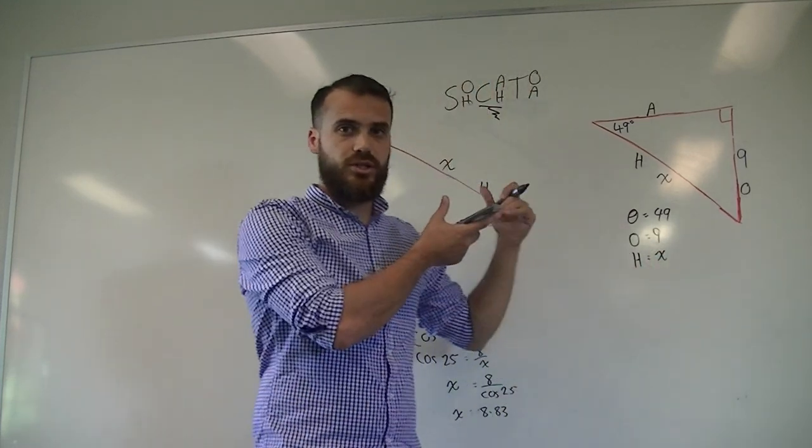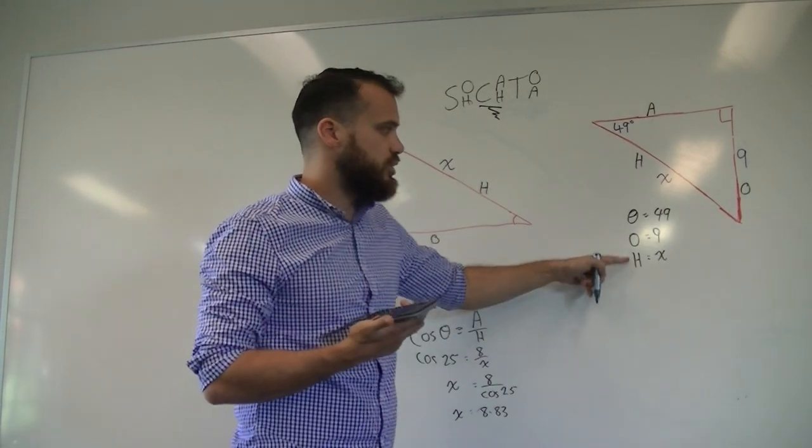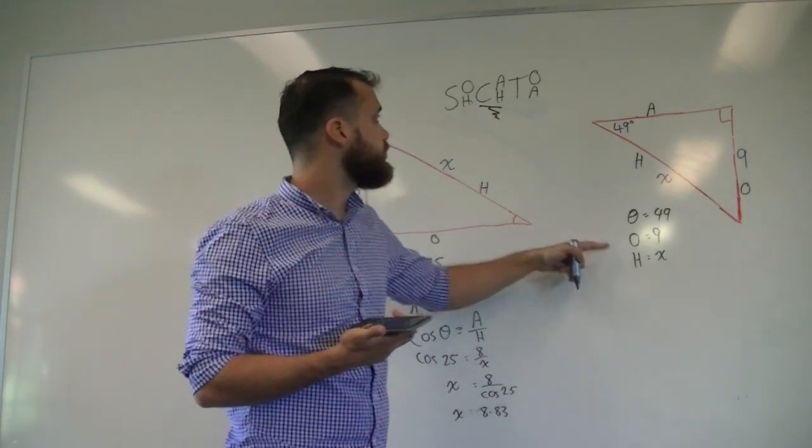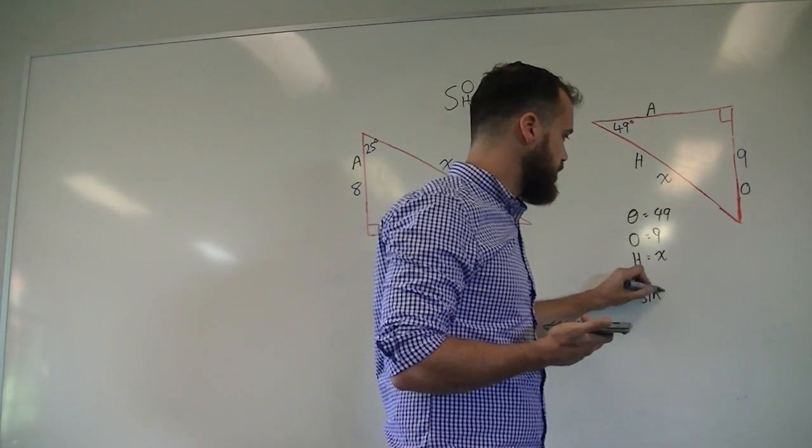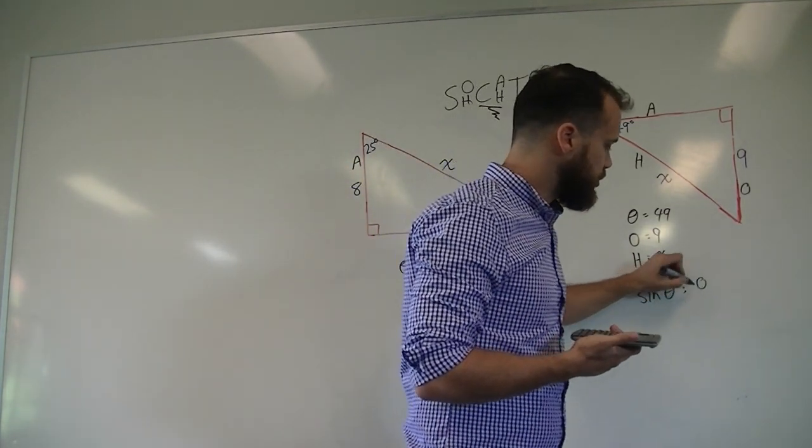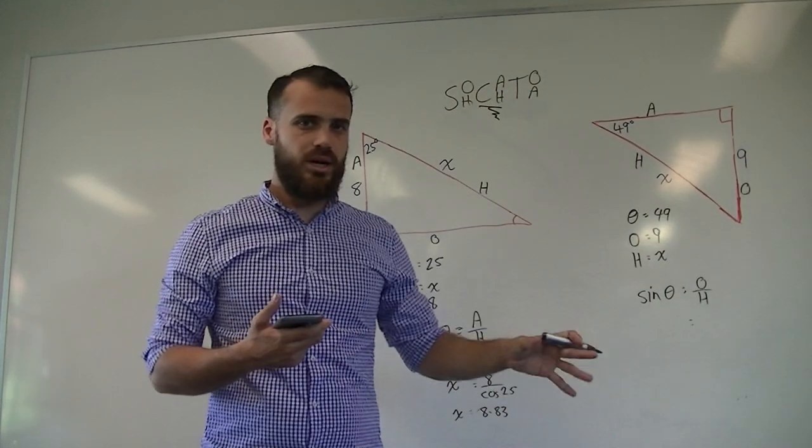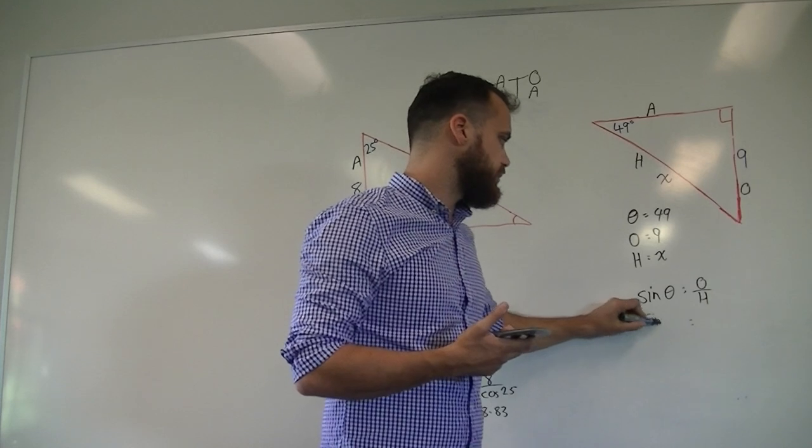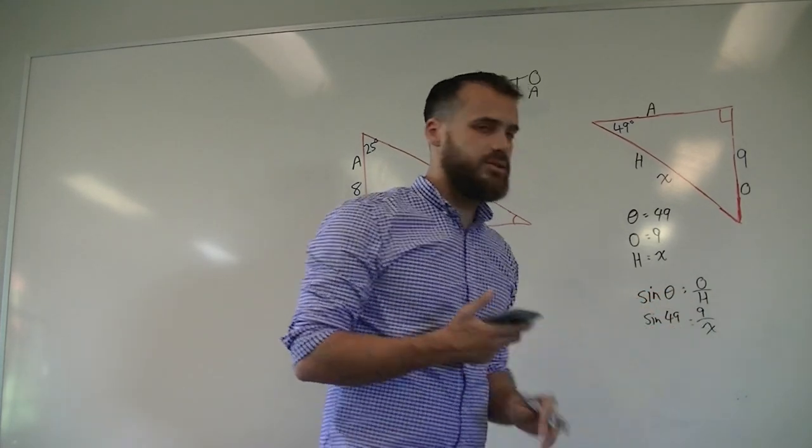Next step, go to SOHCAHTOA, find out which ratio works here. Opposite and hypotenuse are the things we're interested in. Opposite and hypotenuse. So sine theta equals opposite over hypotenuse. Put your numbers in. Sine 49 equals 9 over x. Stop there.